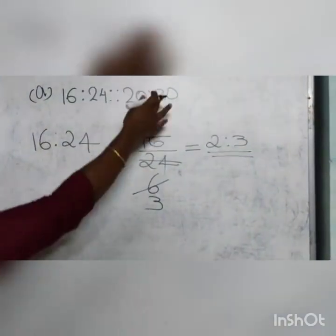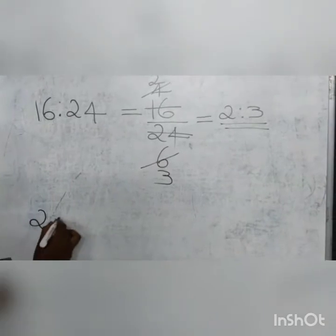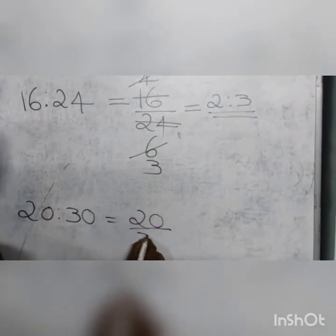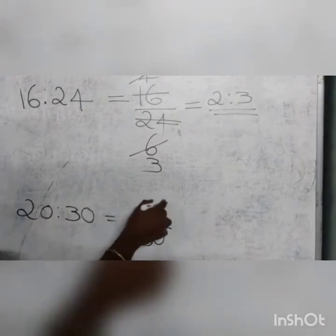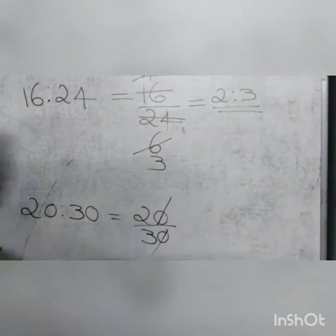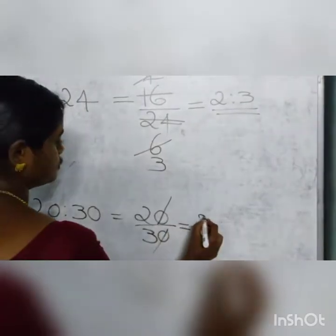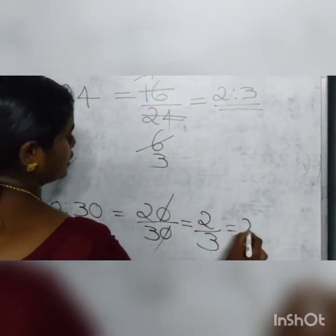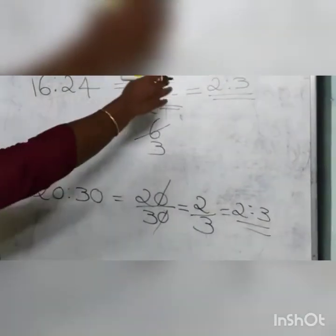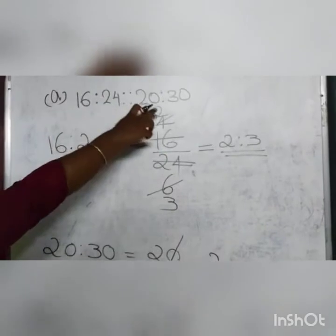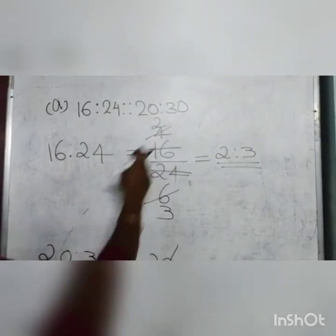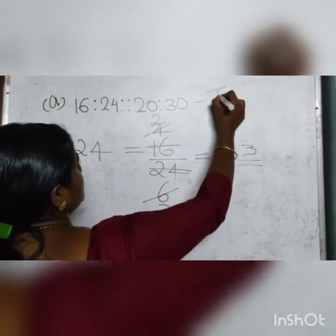Now check the next part, 20 is to 30. Write 20 is to 30, that is equal to 20 divided by 30. To convert this fraction into its simplest form, cut both zeros from numerator and denominator. Hence this fraction becomes 2 by 3, and hence the ratio is 2 is to 3. Now it is clear that both ratios are equal to 2 is to 3. That means the given statement is true: 16 is to 24 is in proportion with 20 is to 30. Hence, we can say that this statement is true.